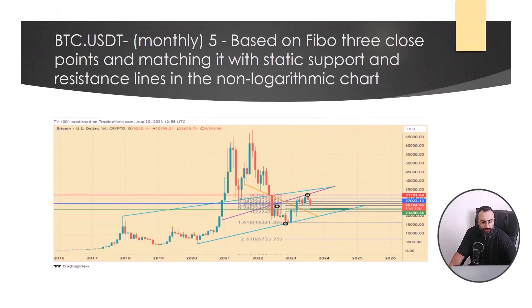If we try for analysis based on FIBO three close points and matching it with static support and resistance line in the non-logarithmic chart, as can be seen in the figure, the reason for the price pause in these limits and before reaching the specific matching area is the support of the FIBO level of three nearby points.